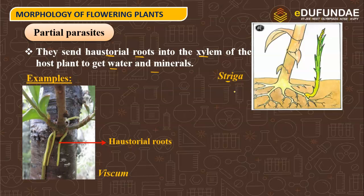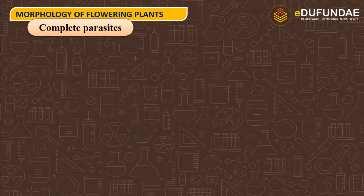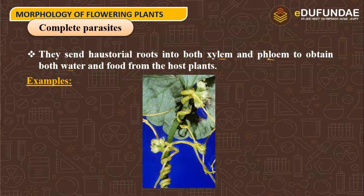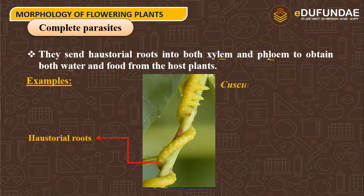Another example of partial parasite is Striga. Complete parasites send haustorial roots into both xylem and phloem to obtain both water and food from the host plant. These are the haustorial roots found in Cuscuta plant, as seen in the picture, which help in the absorption of water and food from the host plant.